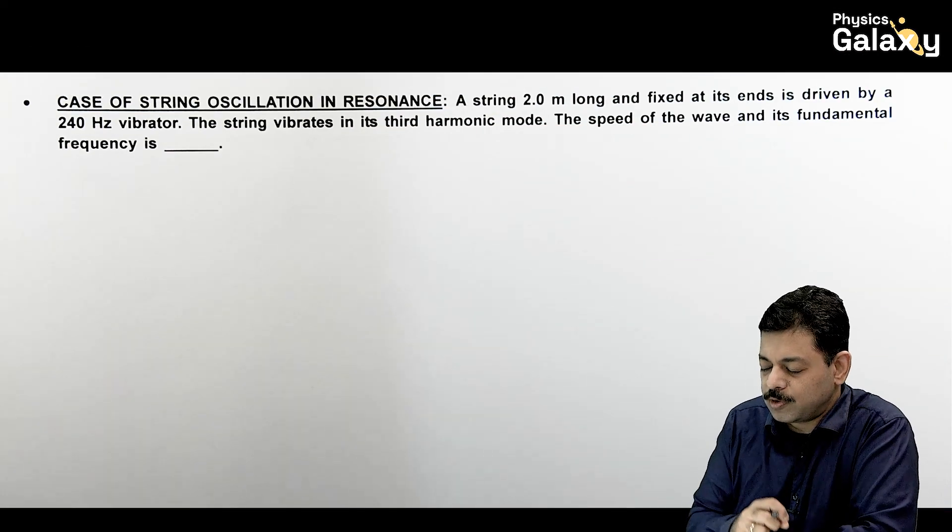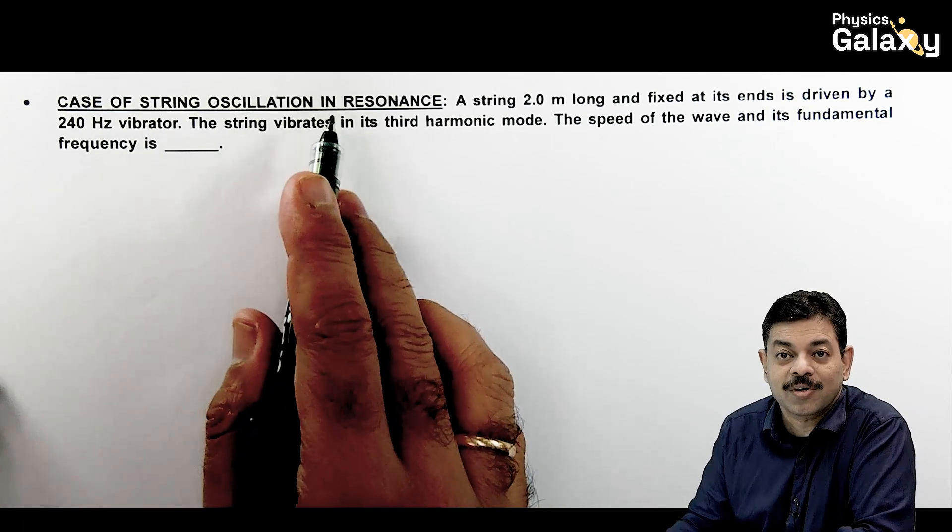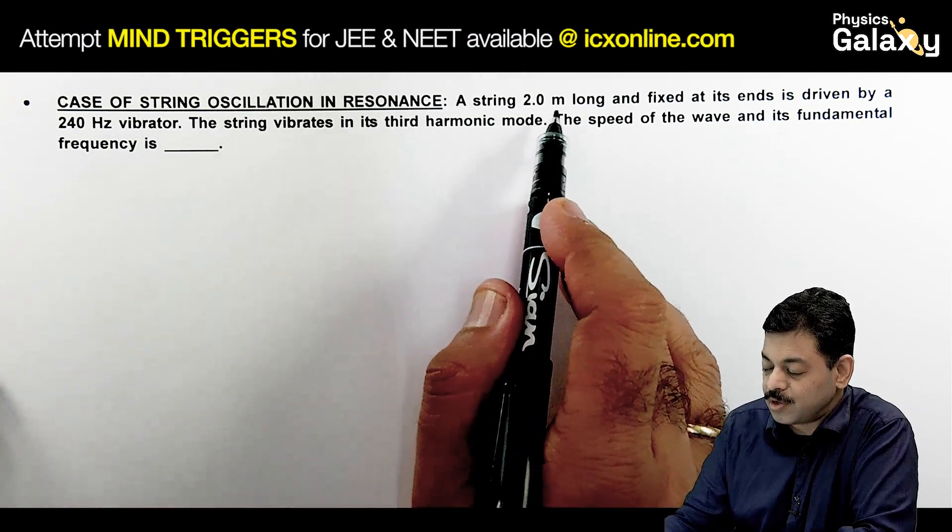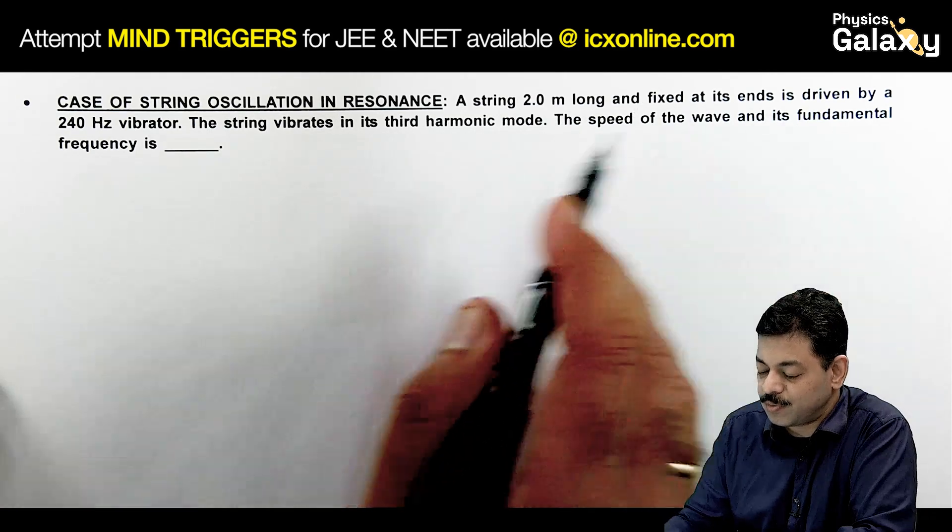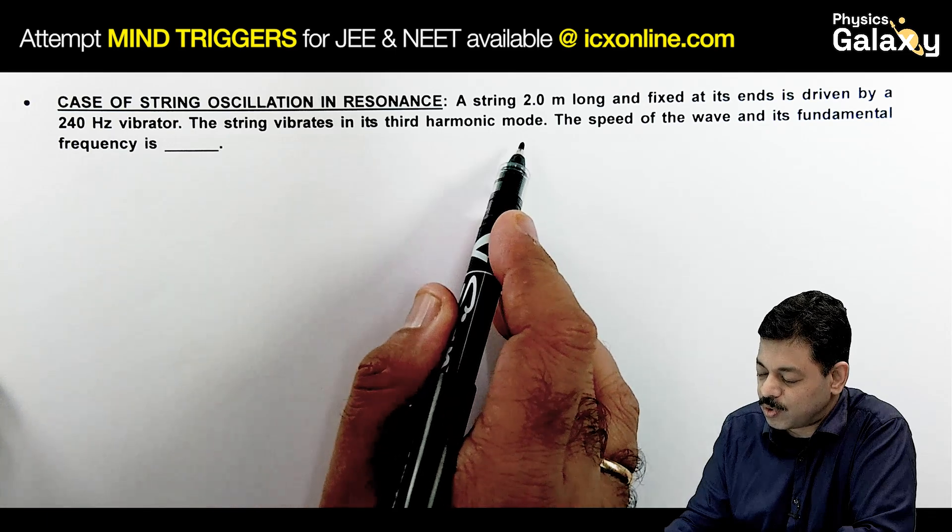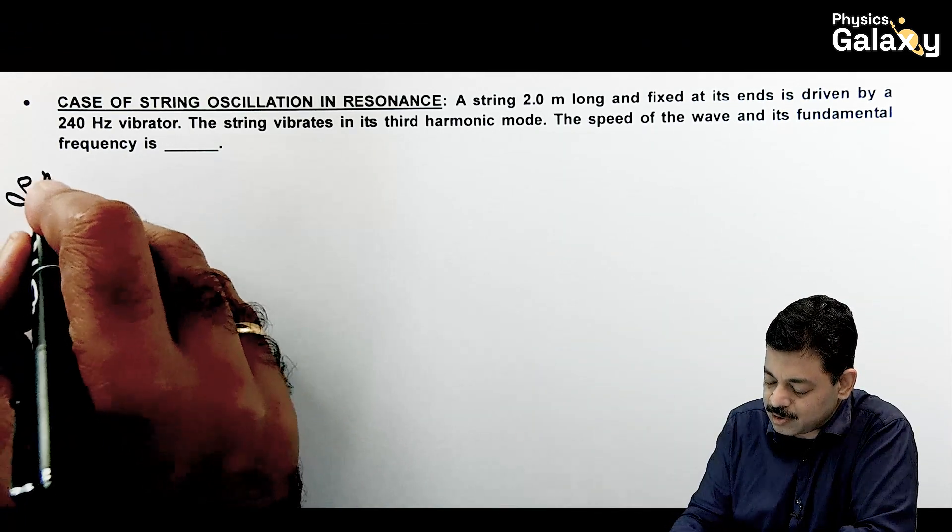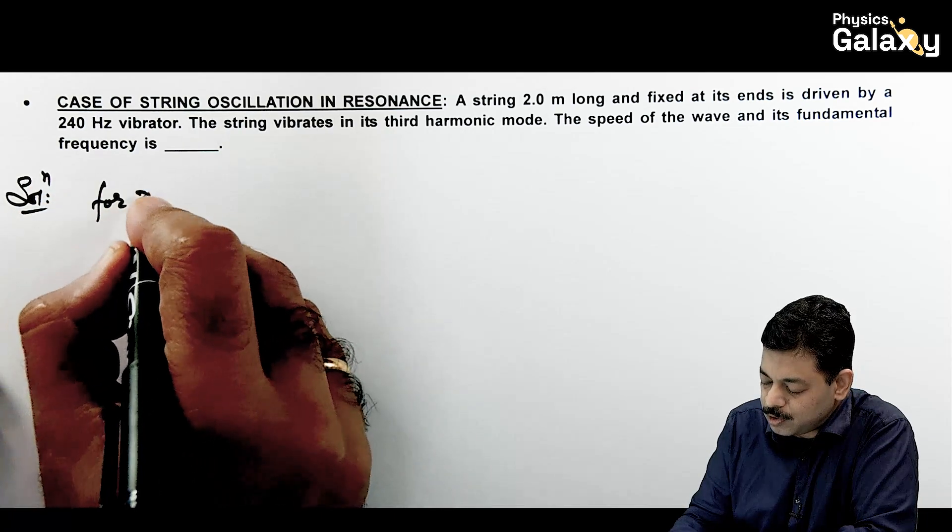Thank you Pooji. If we have a look on the basic resonance condition, it is saying case of string oscillation in resonance. Here it says a string 2 meter long and fixed at its ends is driven by 240 hertz vibrator. So the string vibrates in its third harmonic mode and we need to check the speed of wave and its fundamental frequency.